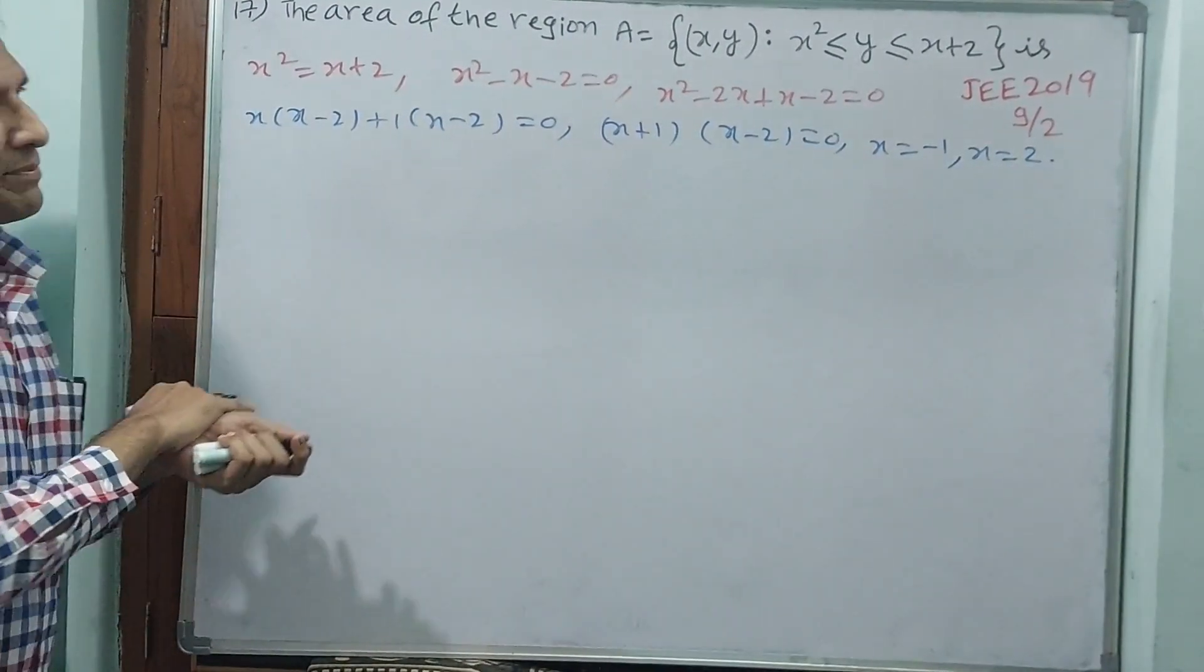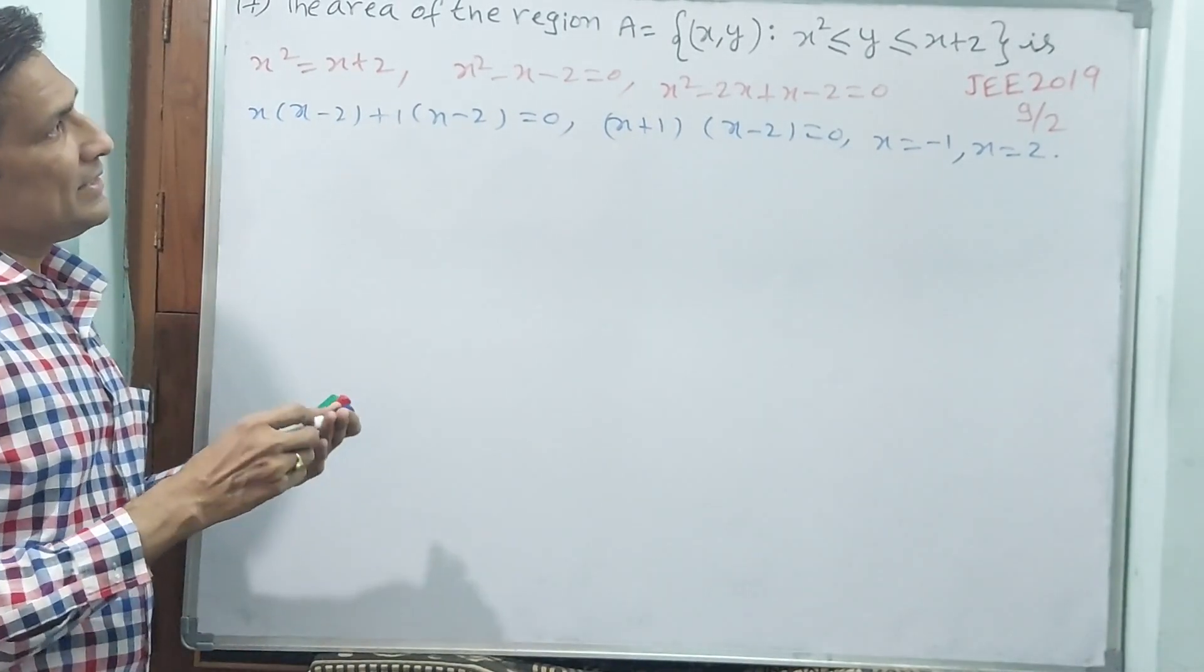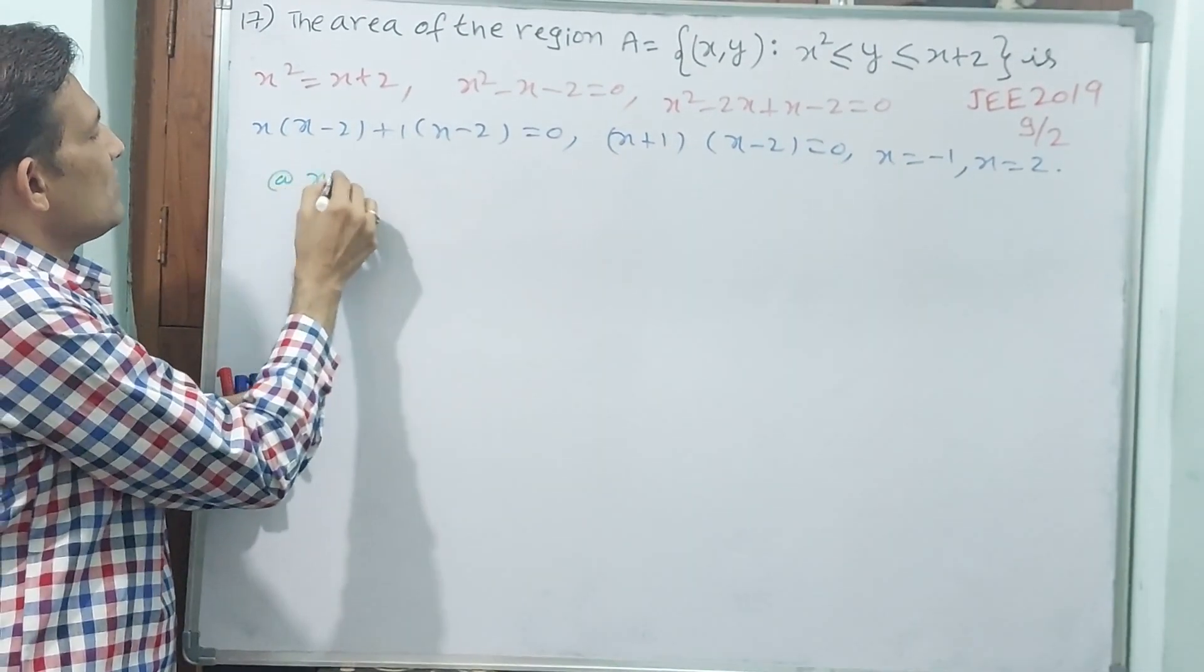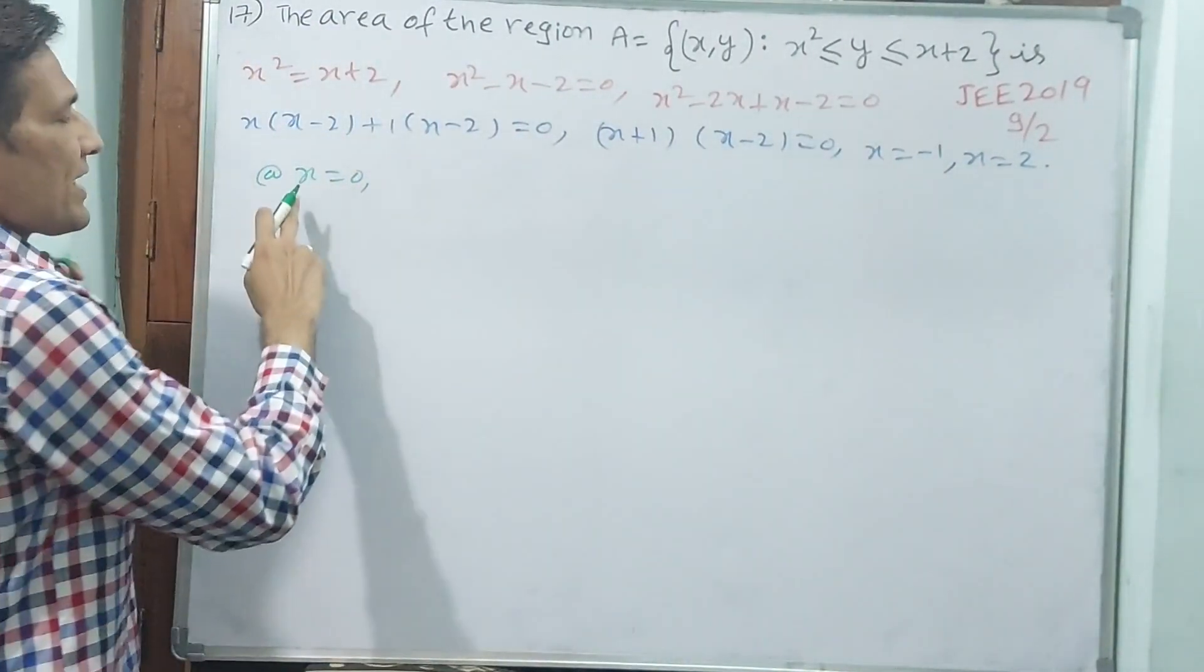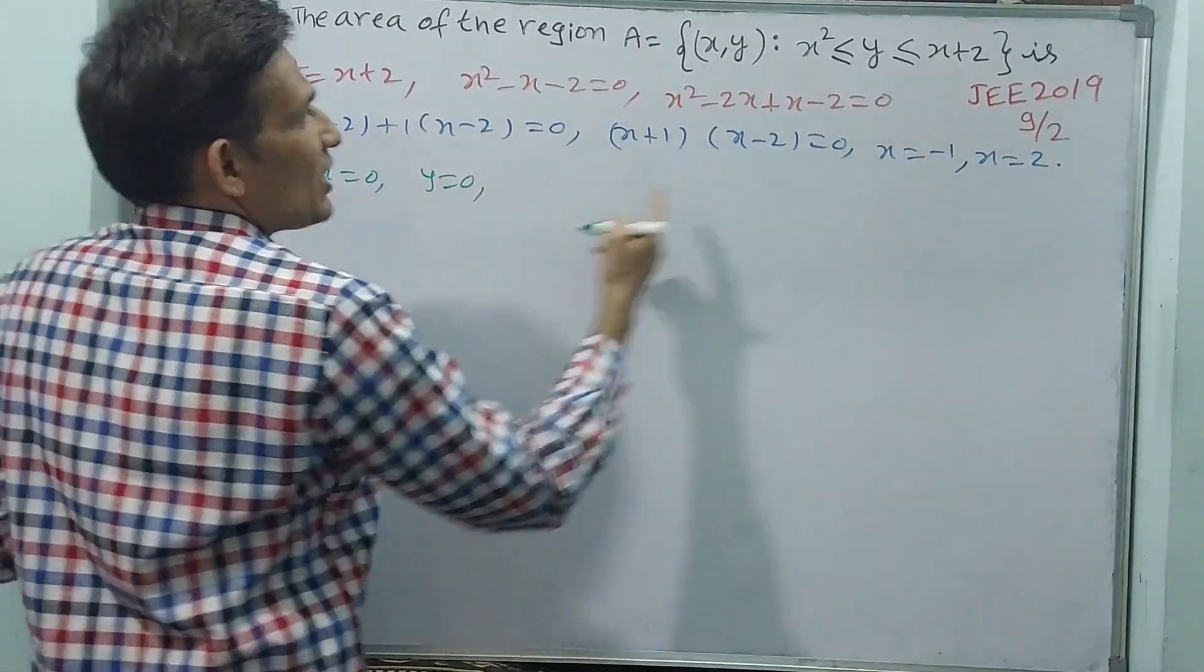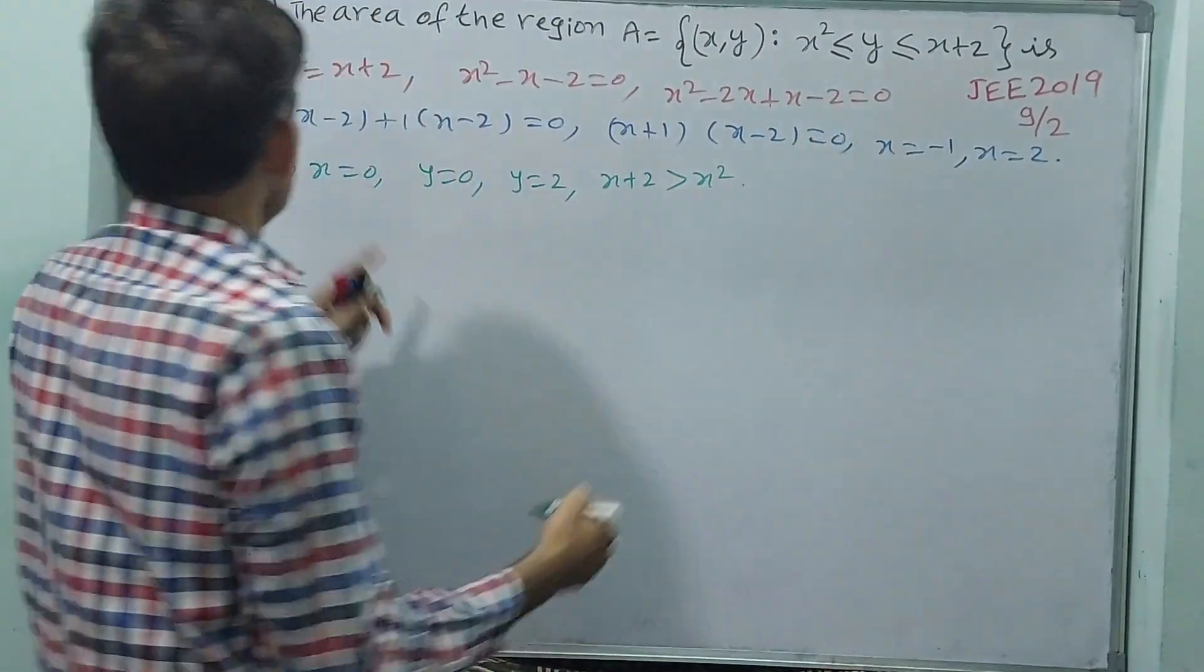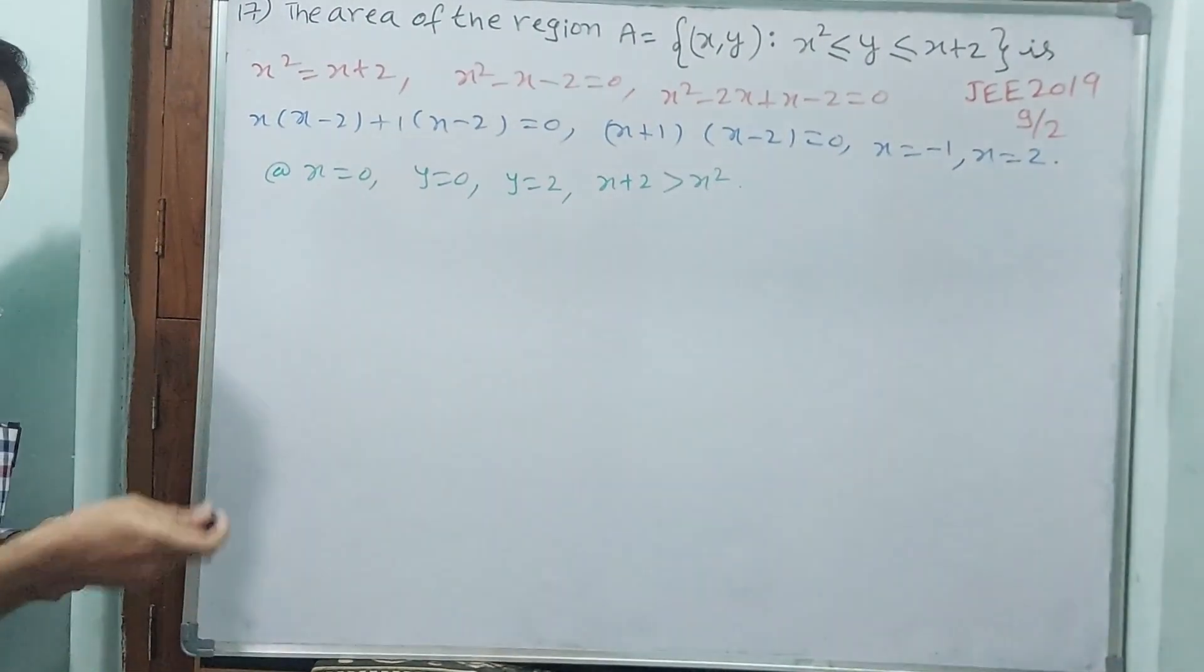But how you are going to take, either x plus 2 minus x square or x square minus x plus 2. How we are going to take? How we are going to see that? See, in between minus 1 and 2, let me take at x is equal to 0. At x is equal to 0, here y is 0. But here y is not 0, it's 2. That means x plus 2 is greater than x square. Understand? Then how we are going to take? We are going to take like this.